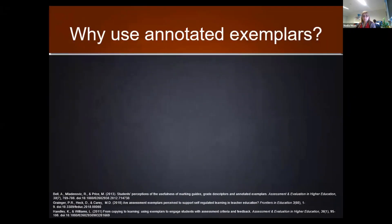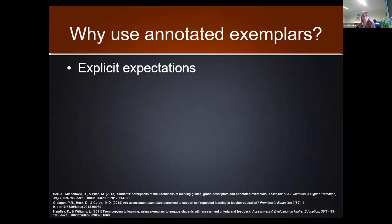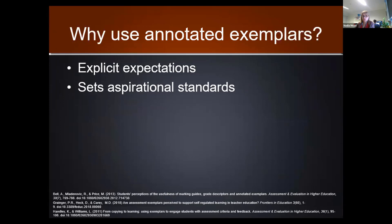So why use annotated exemplars instead of modeled responses? This scaffold sets out the explicit genre expectations and allows students to provide their own content while consolidating features of different types of writing across their degree. The annotated exemplar sets aspirational standards but includes the roadmap to reach them. By adding notes in the relevant margins, students are given the purpose of each feature and guided how to use them appropriately — a document they can return to again and again as they work through the drafting and redrafting process.